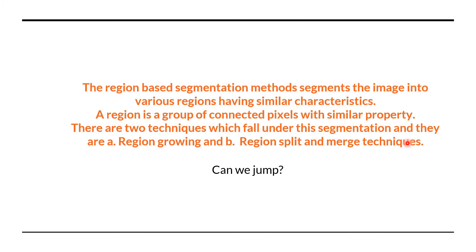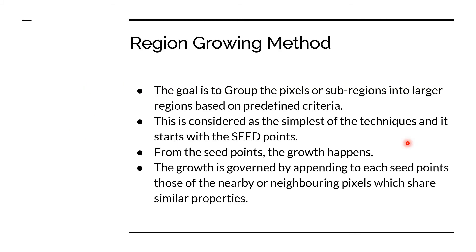Since we cannot cover both in one session, I am going to take them one at a time. We are going ahead with region growing right now. Our motto is simple: it's all about grouping pixels or sub-regions into a larger region based on some predefined criteria — the features or characteristics they share in common. There is a seed point, and from the seed point the growth will happen by appending neighboring pixels which share the common properties. I will check if the neighboring pixel shares the same features as the seed point, and if yes, I will add it and keep growing.